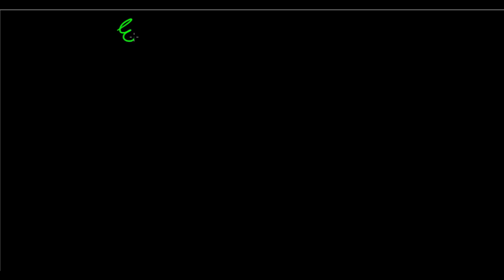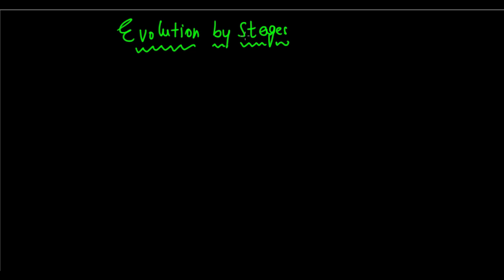We will now be discussing how evolution is a stage-by-stage process. It is not an overnight process, it is not a sudden process. Let us have a look at the next topic: evolution by stages. Evolution takes place by stages — it does not take place suddenly. It happens in stages, and that's what we're going to study here.